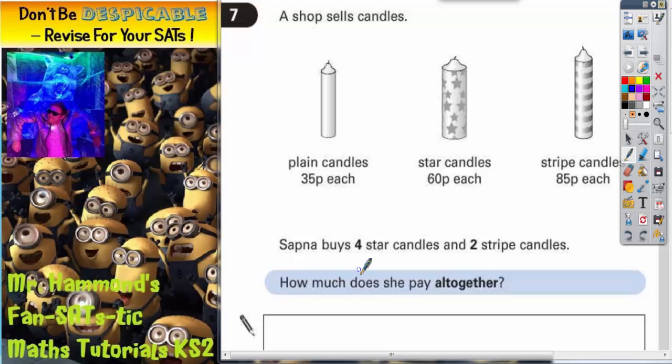Sapna buys four star candles, so she wants four of these, and two striped candles, so she wants two of these. How much does she pay altogether?